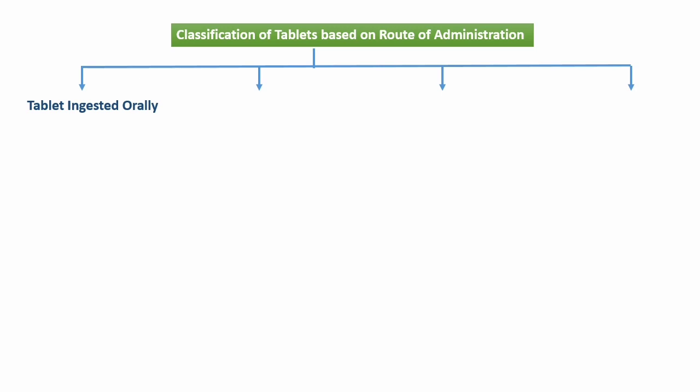Orally — these are tablets which are taken by the mouth or oral route. In this category, the tablets are compressed tablets, multiple compressed tablets, delayed release tablets, and film coated tablets.